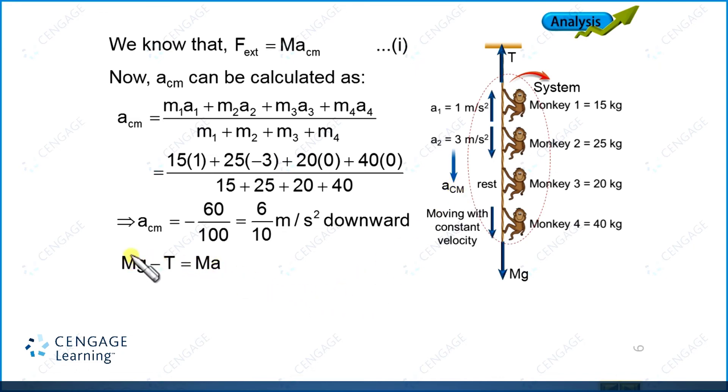Now we can substitute capital M equal to 100, and T we need to find. Capital M is again 100 and a_cm we have calculated, that is equal to 0.6. So let us calculate the value of T. T is equal to 1000 minus 60, so it is 940 newton. This is the tension force, and this tension force is also force applied by the support on the rope.